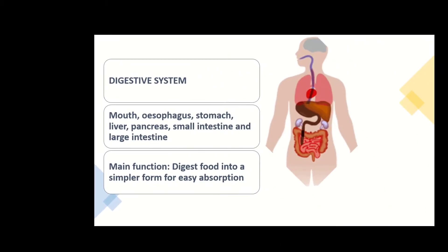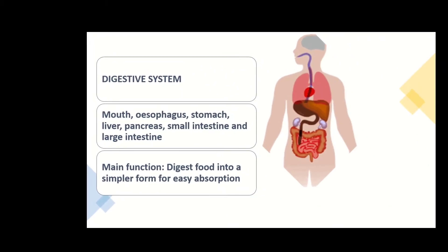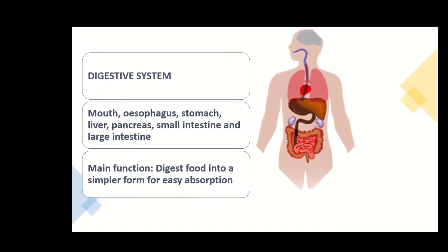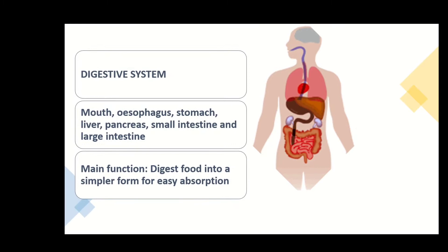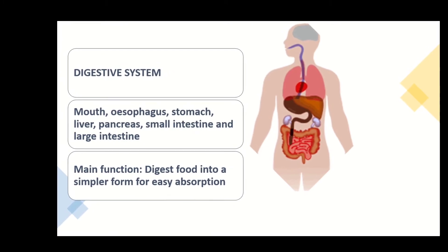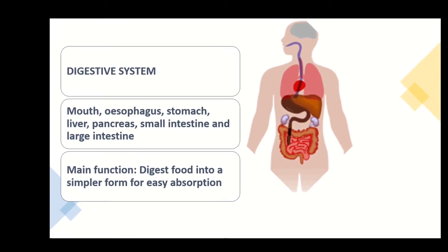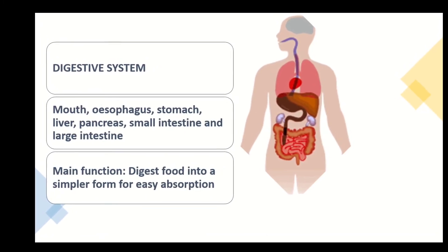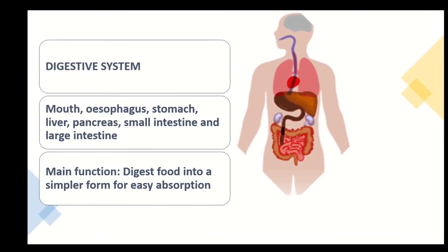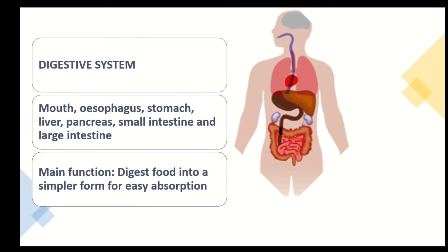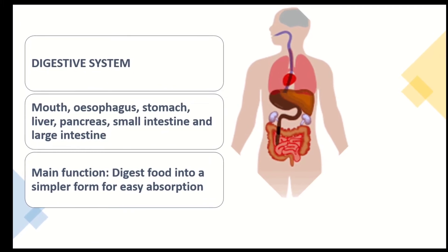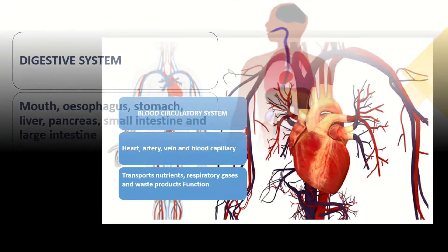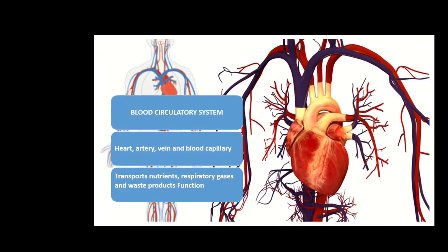The first is the digestive system. It consists of the mouth, esophagus, stomach, liver, pancreas, small intestine, and large intestine. The function is to digest food into a simple form for easy absorption.